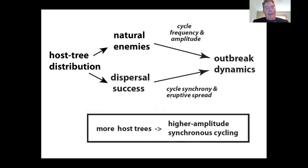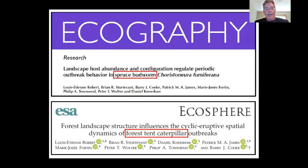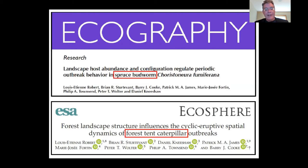Based on the dissertation research, we thought that host tree distributions should affect outbreak dynamics in two ways. If affecting herbivores, it could impact their dispersal success, influencing cycle synchrony and degree of eruptive spread. If affecting natural enemies, as shown in Jens' work, it should affect cycle amplitude and frequency. In summary, we thought more host trees would lead to higher amplitude, more synchronous cycling. Louis-Etienne published two well-received papers — the spruce budworm paper in 2018 in Ecography and the forest tent caterpillar paper in 2020 in Ecosphere — both showing that host forest cover improves the intensity, periodicity, and synchrony of outbreaks.